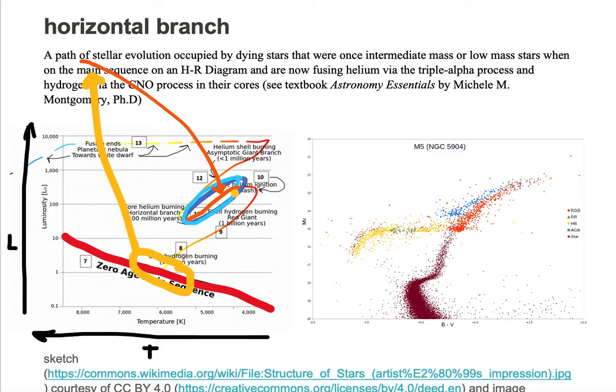These dying stellar objects now fuse helium via the triple alpha process and hydrogen via the CNO process in their cores. When they were on the main sequence, they were only fusing hydrogen into helium by the PP fusion chain. So they're using different fusion processes when on the horizontal branch, evolving from a main sequence star.